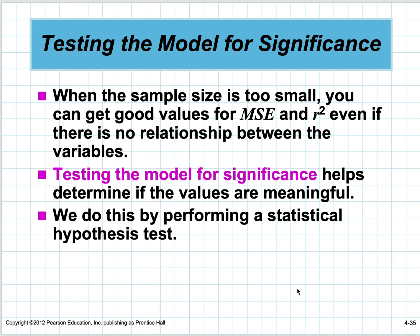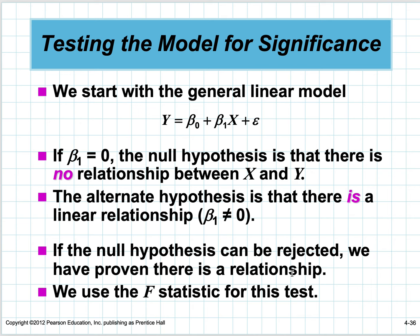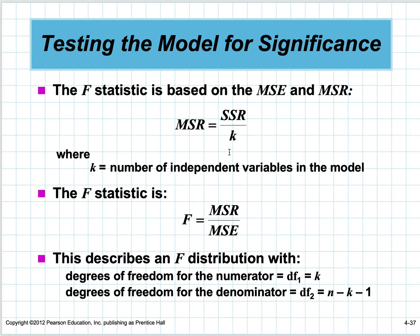Testing the model for significance: we start with the general linear model. The null hypothesis is that the slope is zero, meaning no relationship. The alternative hypothesis is that there is a linear relationship and beta one is not zero. If the null hypothesis can be rejected, we have proven there is a relationship. We use the F-statistic for this—it was in the data analysis output.